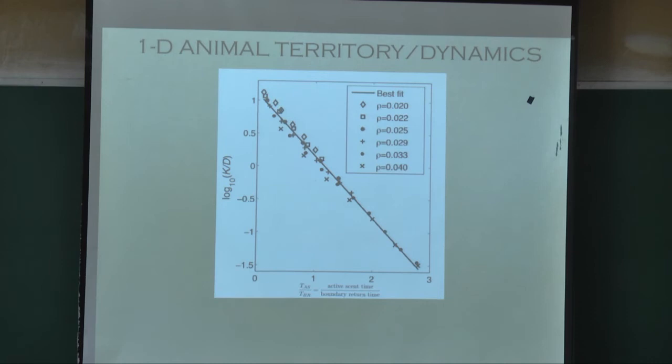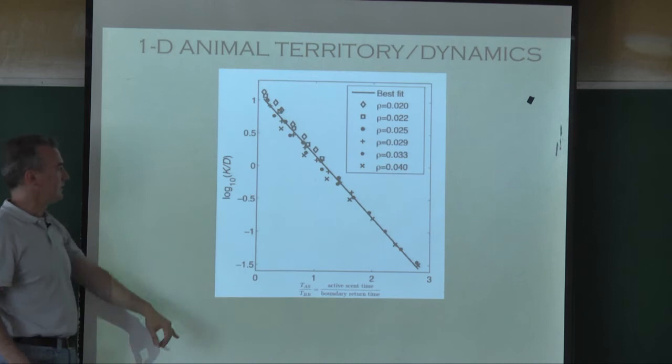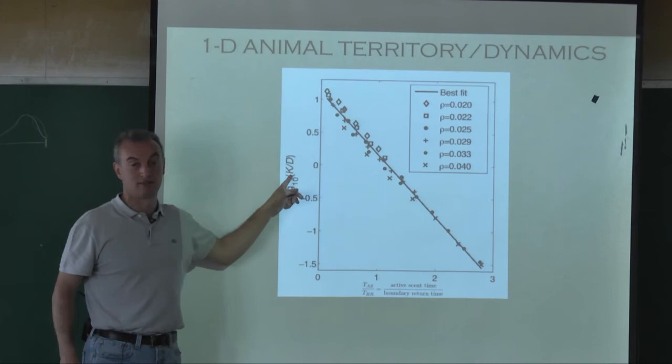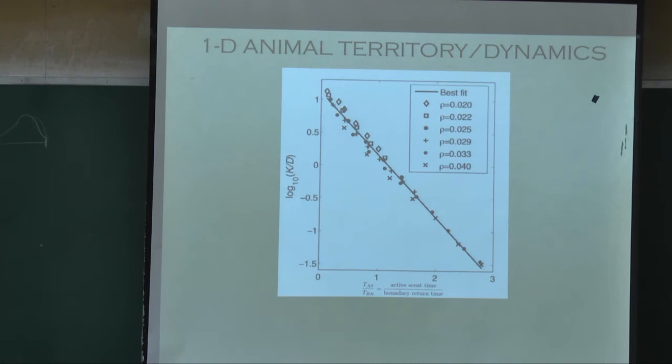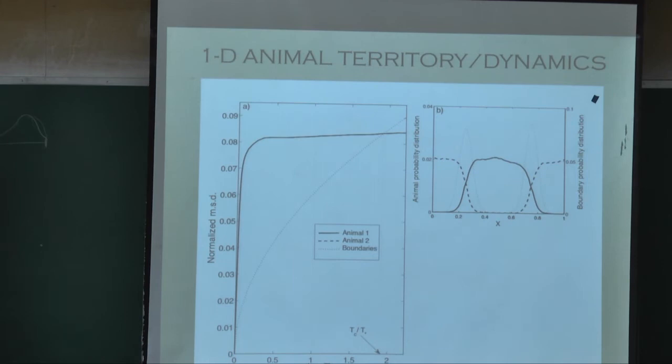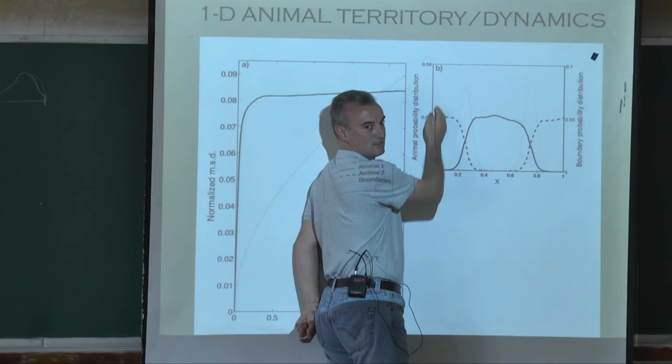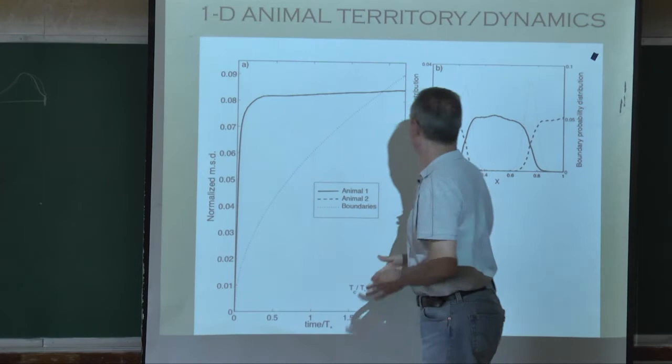On this log-scale plot, different densities fall on the same line because if you change density, everything rescales — the average territory size is the inverse of population density. So the active scent time rescales accordingly. You do a first passage calculation to understand this curve quantitatively. Along times, the first passage variable has an exponential dependence on L — the average territory size, which is the inverse of population density.